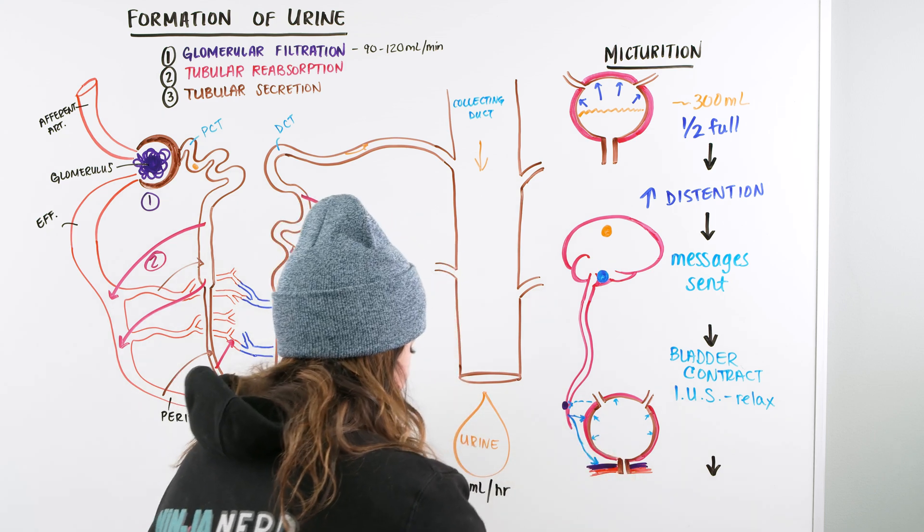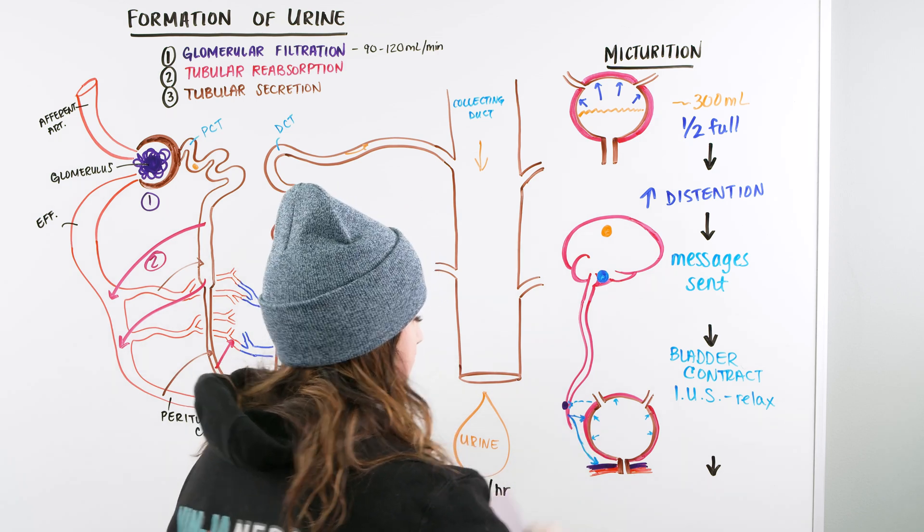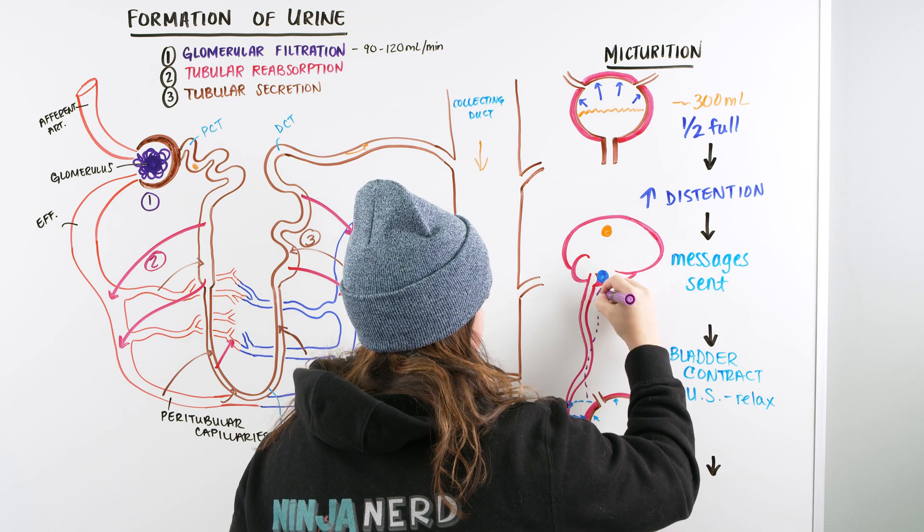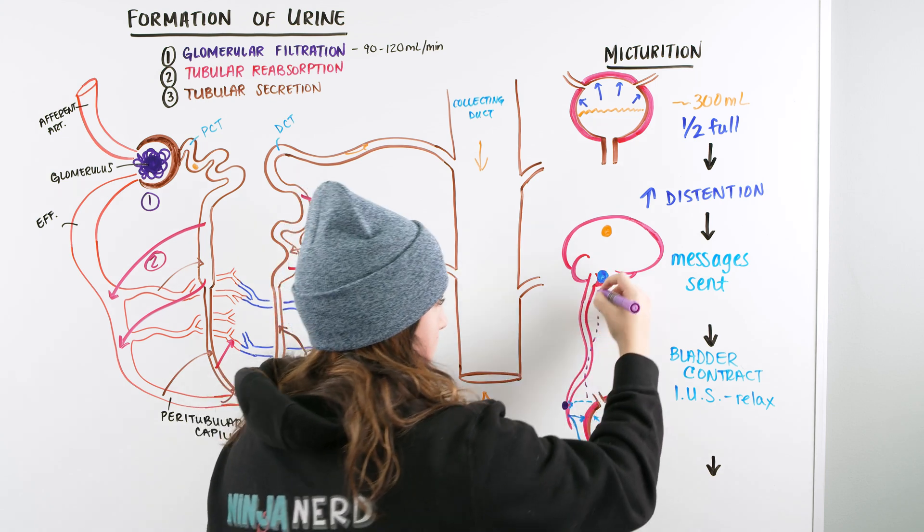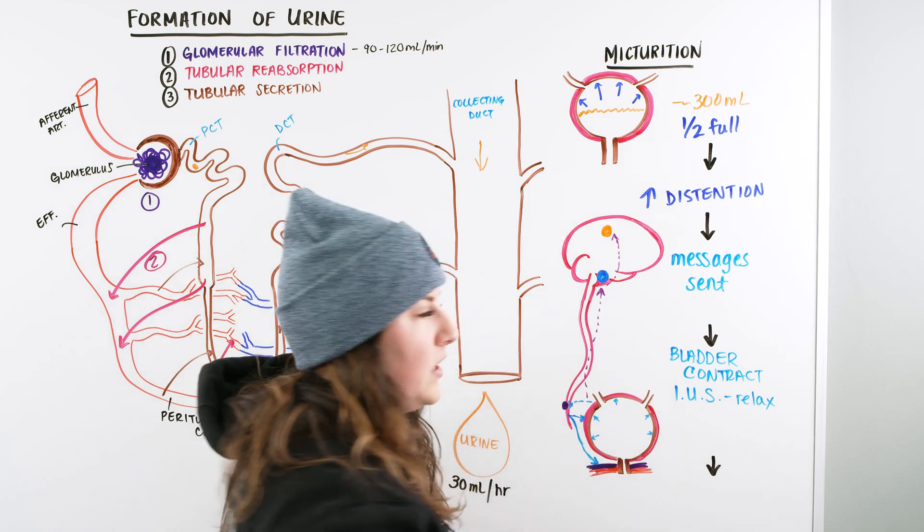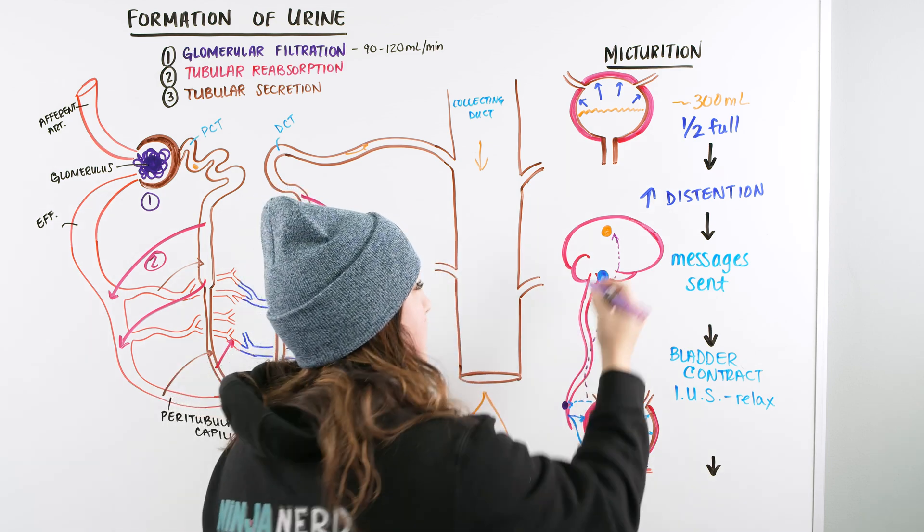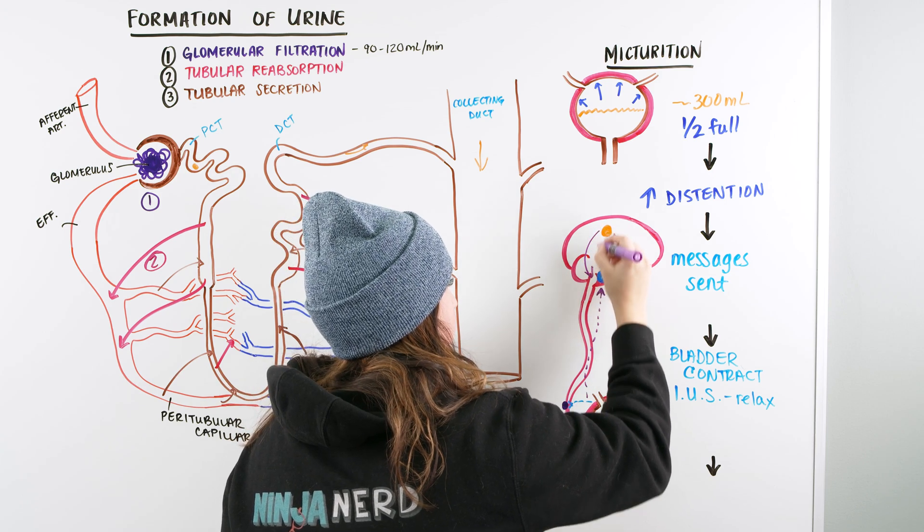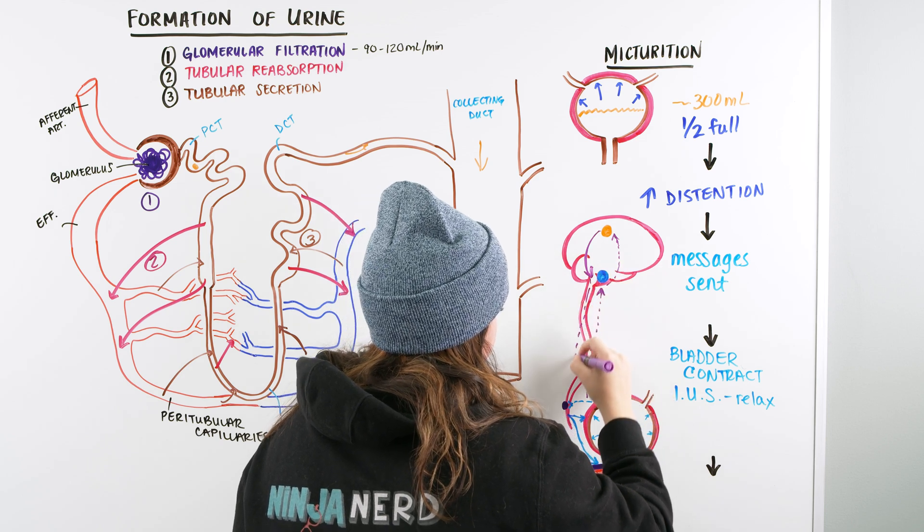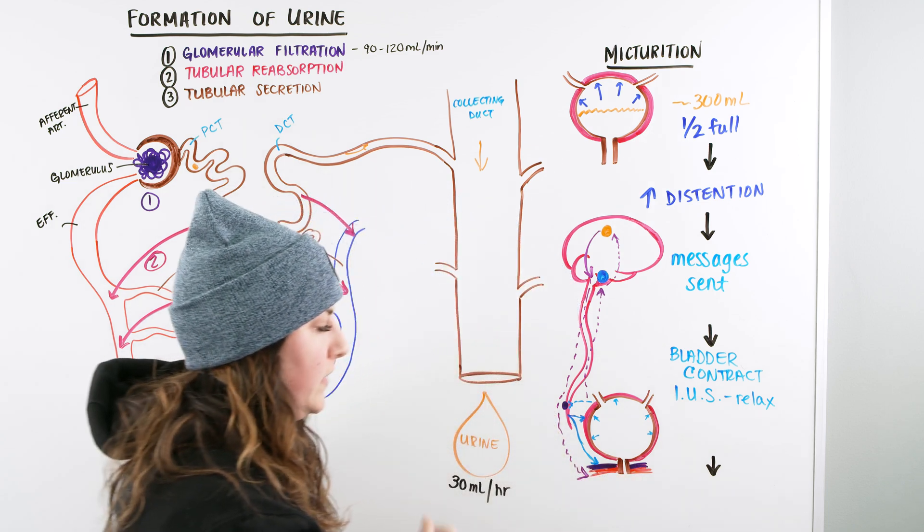When we have this, we also have information that gets sent up to our pons. We have a pontine micturition center, and our pontine micturition center is like, hey, we need to pee. And it goes to our cerebral cortex, and our cerebral cortex is like, that's great. I note that we need to pee, but we can't pee right now, because we are in the middle of an exam. So it sends a message back to the pontine micturition center, and it says, yo, we're not peeing yet. So because of that, it inhibits the relaxation of the external urethral sphincter.